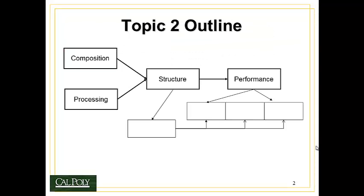The outline follows our big picture outline that we talked about in Topic 1 in class. Remember that there are four key components to the big picture of materials engineering: the composition of the material or what it's made out of, how it's processed, and together the composition and the processing determine the structure of the material. And that the structure, how atoms are bonded, how microstructure is formed, and so on, determines the performance of the material.